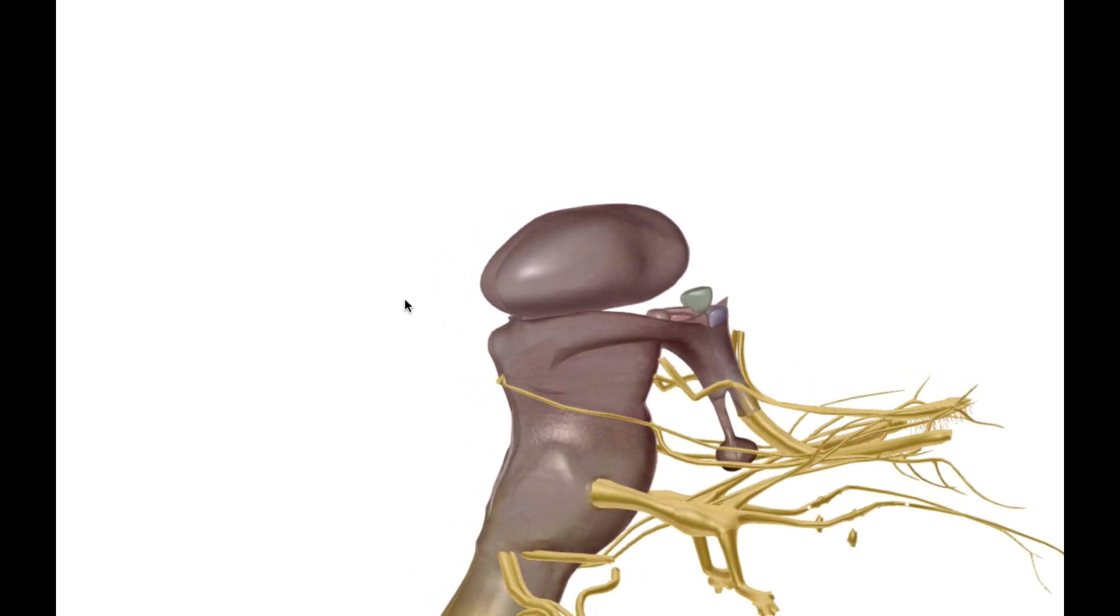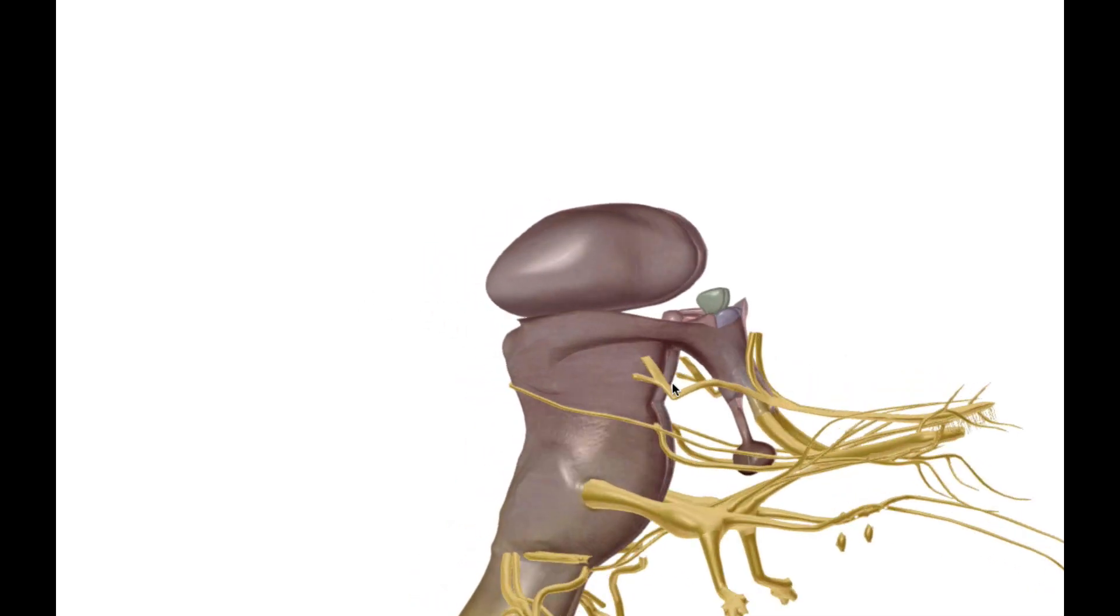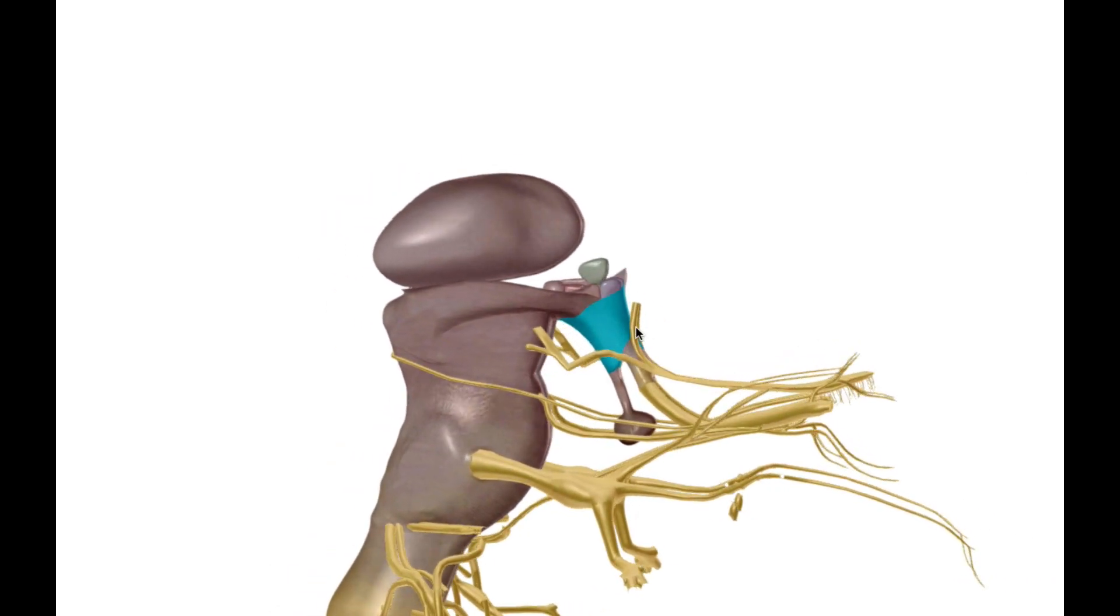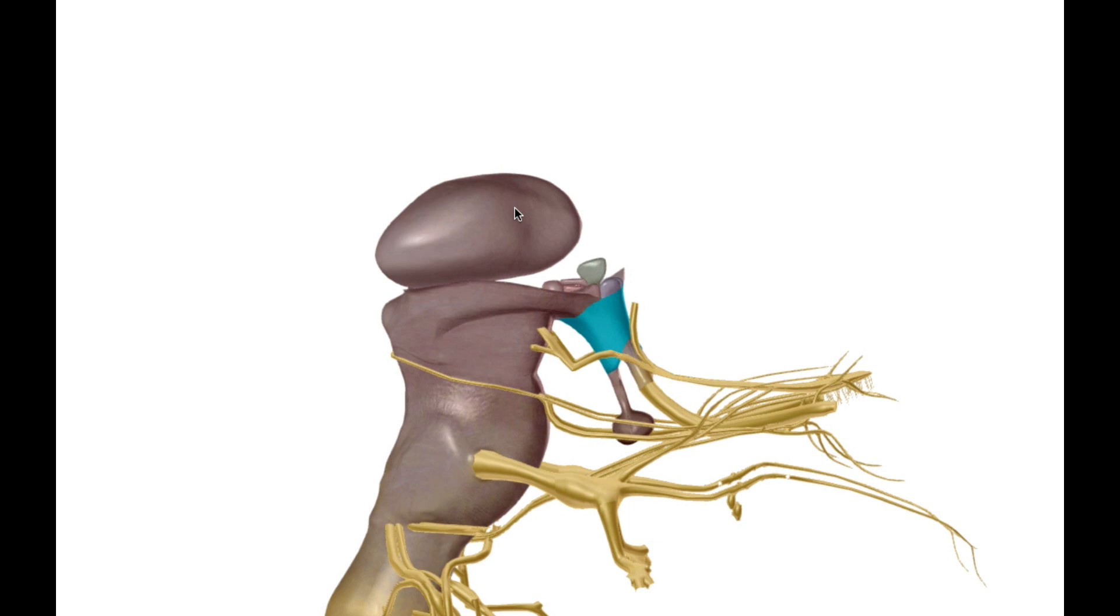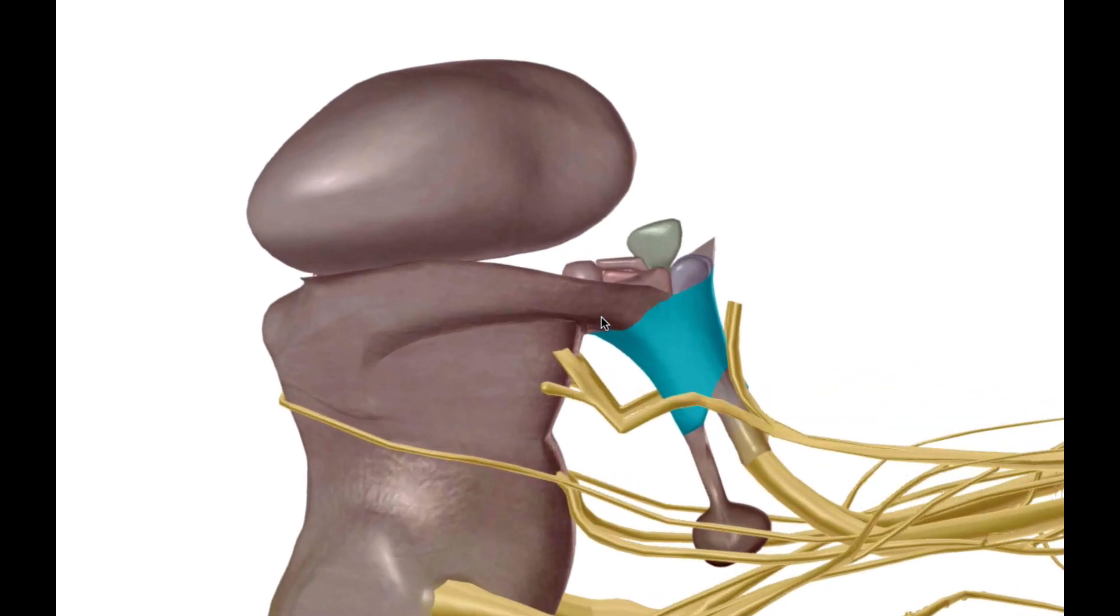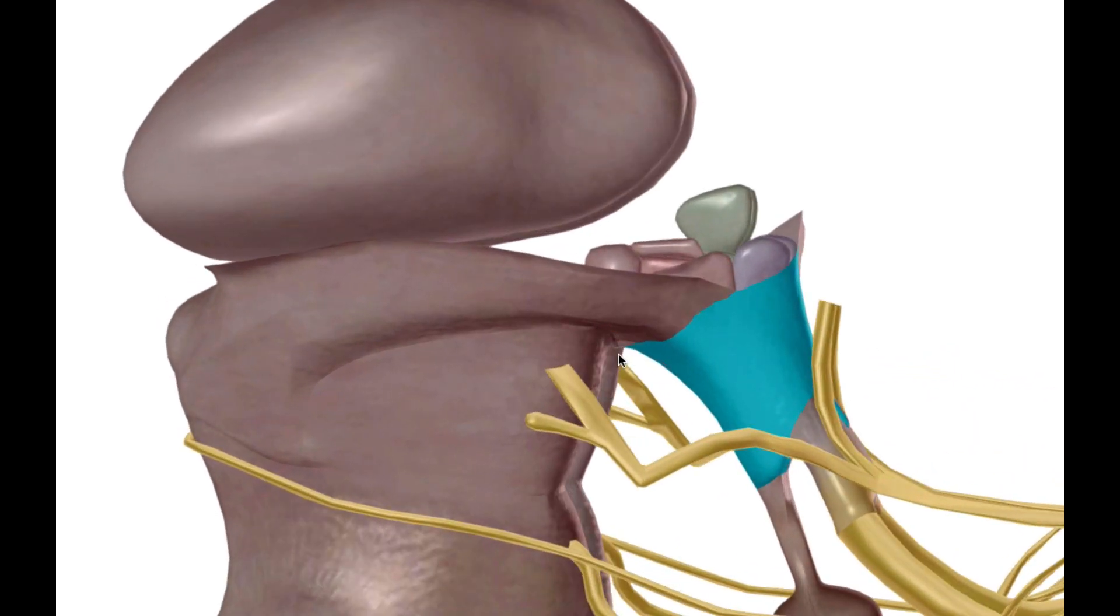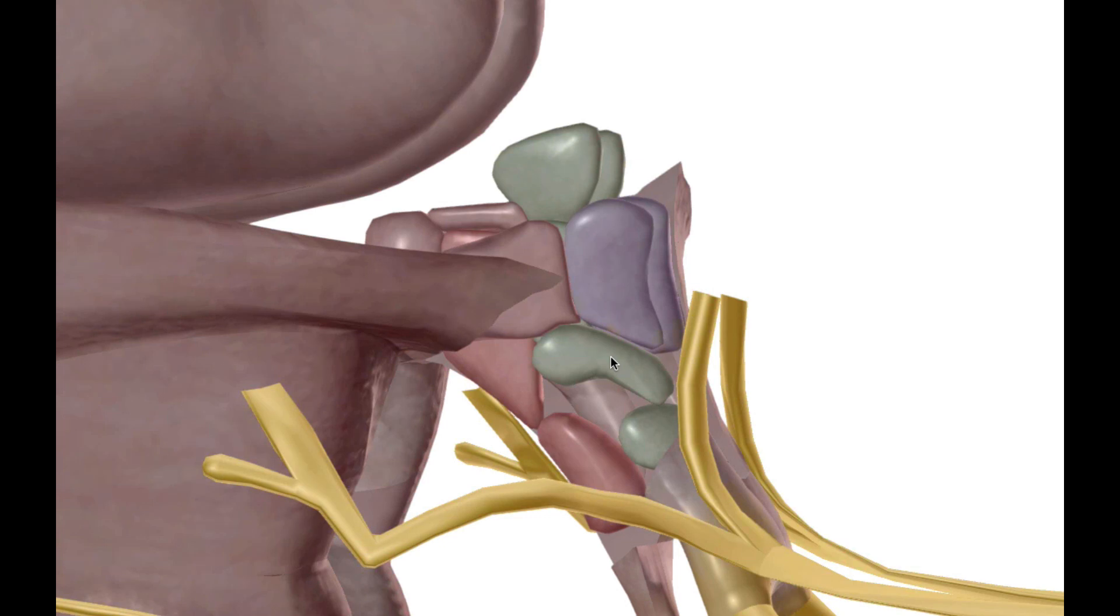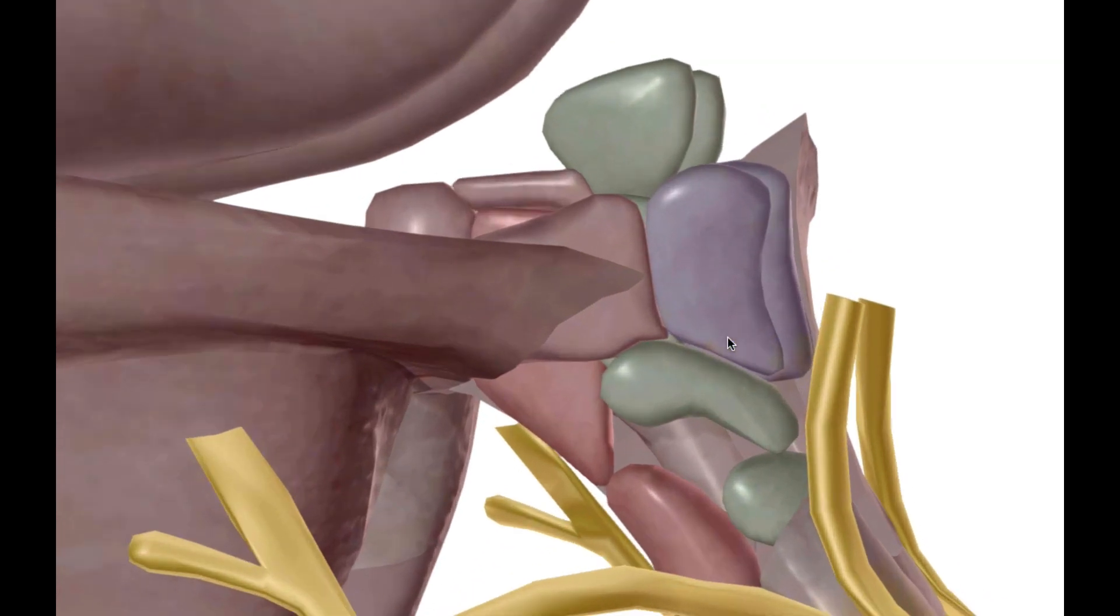Let's zoom in on the hypothalamus. Hypo meaning below—just below the thalamus. As we zoom in, one of the things that I want to highlight here is the structures that make up the hypothalamus. I'm going to take off that covering.